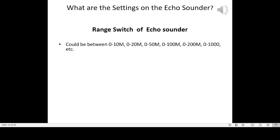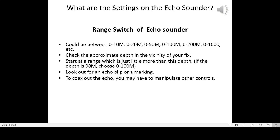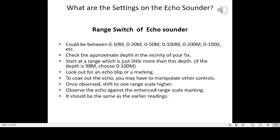The range switch of the echo sounder can be set to 0–10 m, 0–20 m, 0–50 m, 0–100 m, 0–200 m, 0–1000 m, etc. Check the approximate depth in the vicinity of your fix and start at a range just a little more than this depth — if the depth is 98 m, choose 0–100 m. Look out for an echo blip or marking. To coax out the echo, you may need to manipulate other controls. Once observed, shift to one range scale higher and observe the echo against the enhanced range scale marking — it should be the same as the earlier reading.